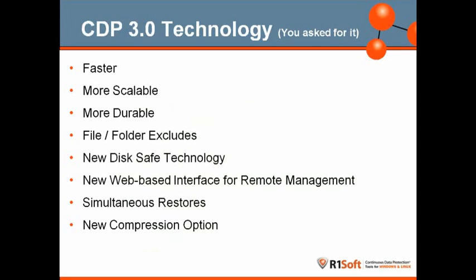Going over the major technology upgrades in 3.0 — and these are all things that you asked for. You wanted faster backups. You wanted more scalable and durable disk safes. You wanted file and folder excludes. You were sick of that clunky, pale orange interface, so you wanted something sleeker to manage your backups from. You wanted the ability to have simultaneous restores. In the old R1 technology, we could only have one restore going for a single server at any given time. In version 2, there was also a limitation where compression had a very negative impact on actual throughput.